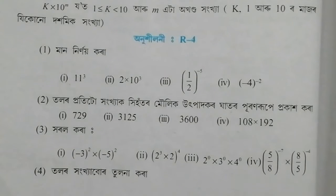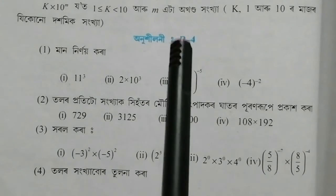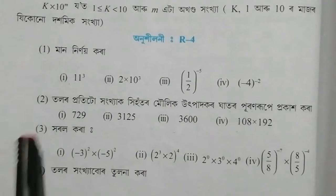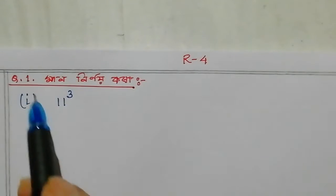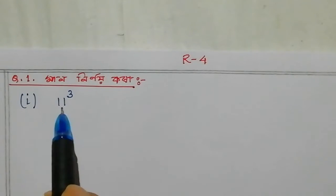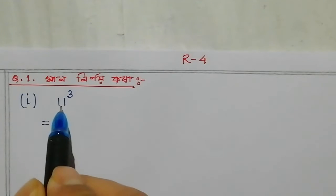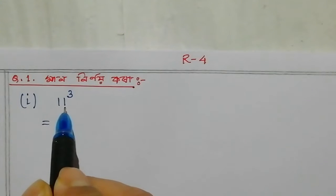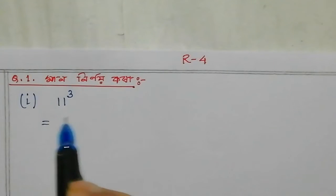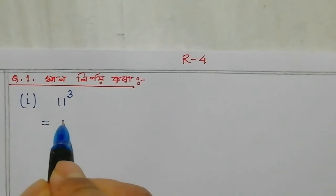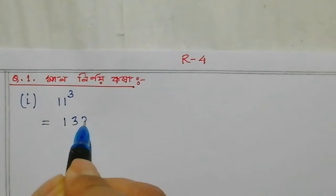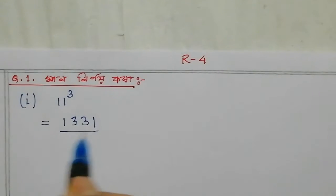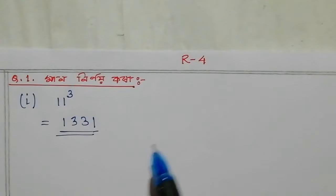Hello students, welcome to my class. Here I am going to ask questions on R4. Exercise question number 1, 2, 3, R4. Question number 1: 1 to 10, 11 cube. 11 into 11 into 11. The answer is 1331.